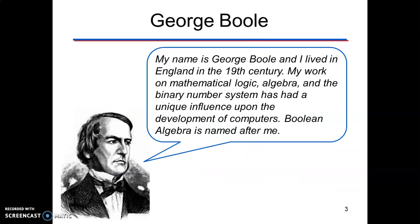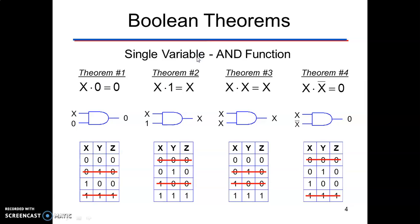Mathematician George Boole invented a new kind of algebra — the algebra of logic — in the year 1854, popularly known as Boolean Algebra or Switching Algebra. A Boolean function is an algebraic expression formed using binary constants, binary variables, and basic logical operations, including AND, OR, and NOT. Boolean Algebra is a convenient and systematic method of expressing and analyzing the operations of digital circuits and systems. Logical operations can be expressed and minimized mathematically using rules, laws, and theorems of Boolean Algebra.